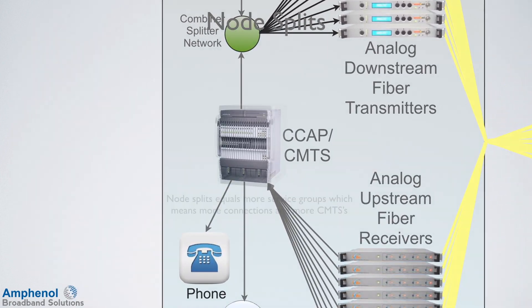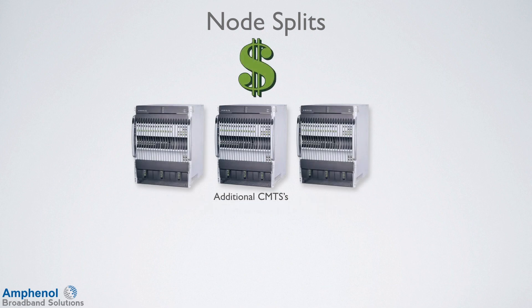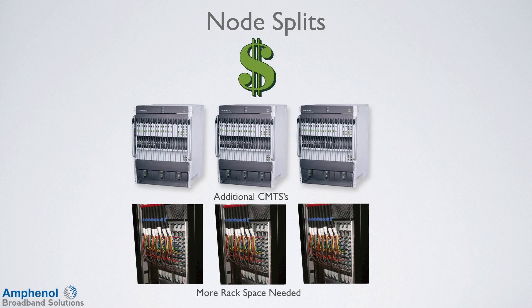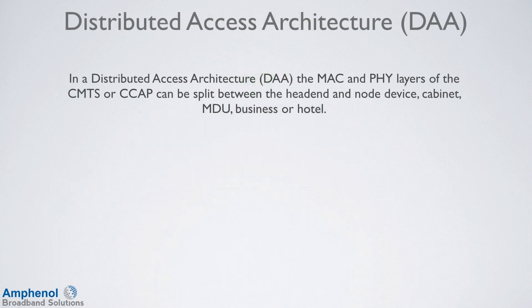Also, with node splits, there are more service groups, which equates to more RF connections and more CMTSs. Additional CMTSs cost money, take up more rack space, and require additional powering and cooling. To solve these challenges, that brings us to the distributed access architecture, called DAA. In a distributed access architecture, the MAC and PHY layers of the CMTS and CCAP can be split between the head-end and node devices, cabinets, MDUs, businesses, or hotels.